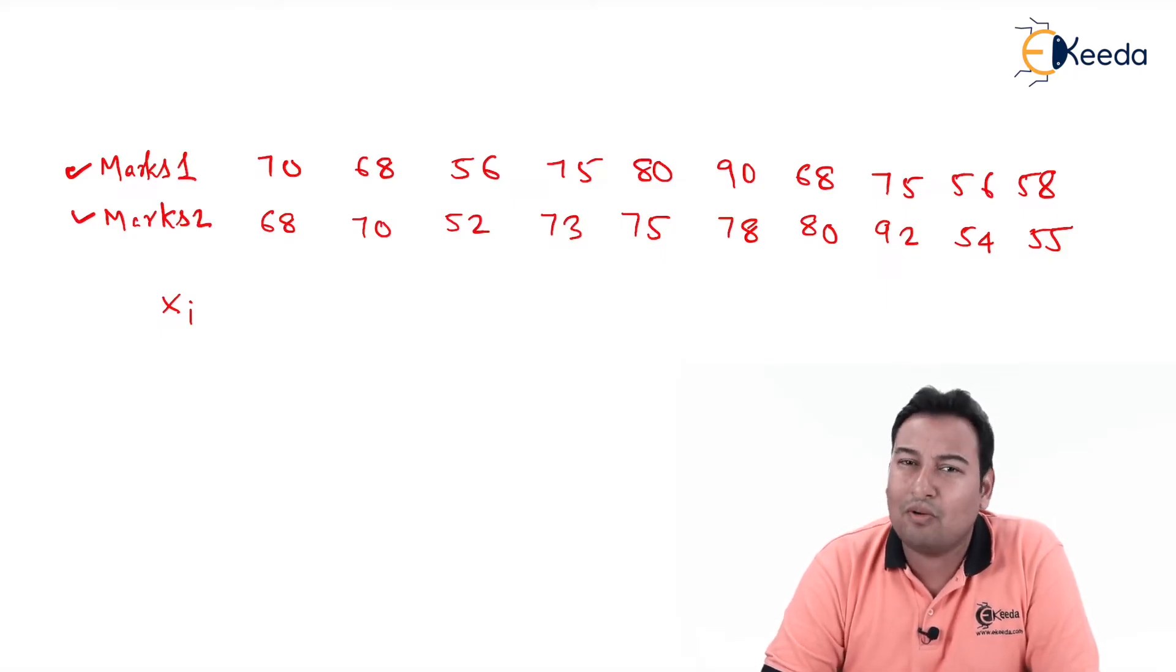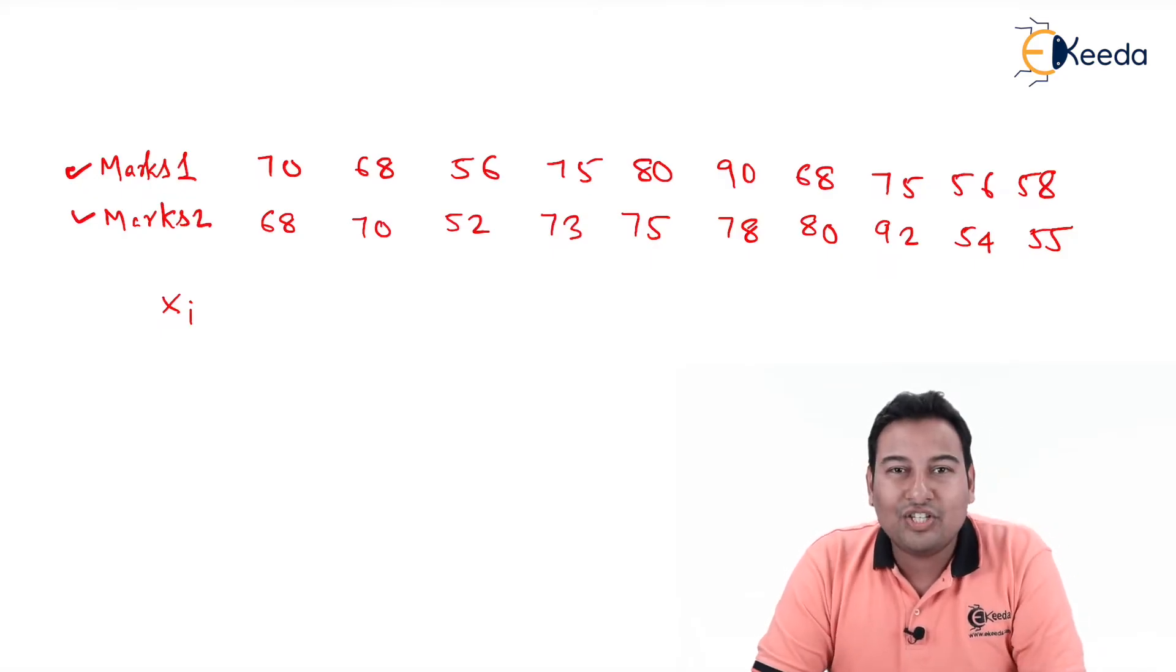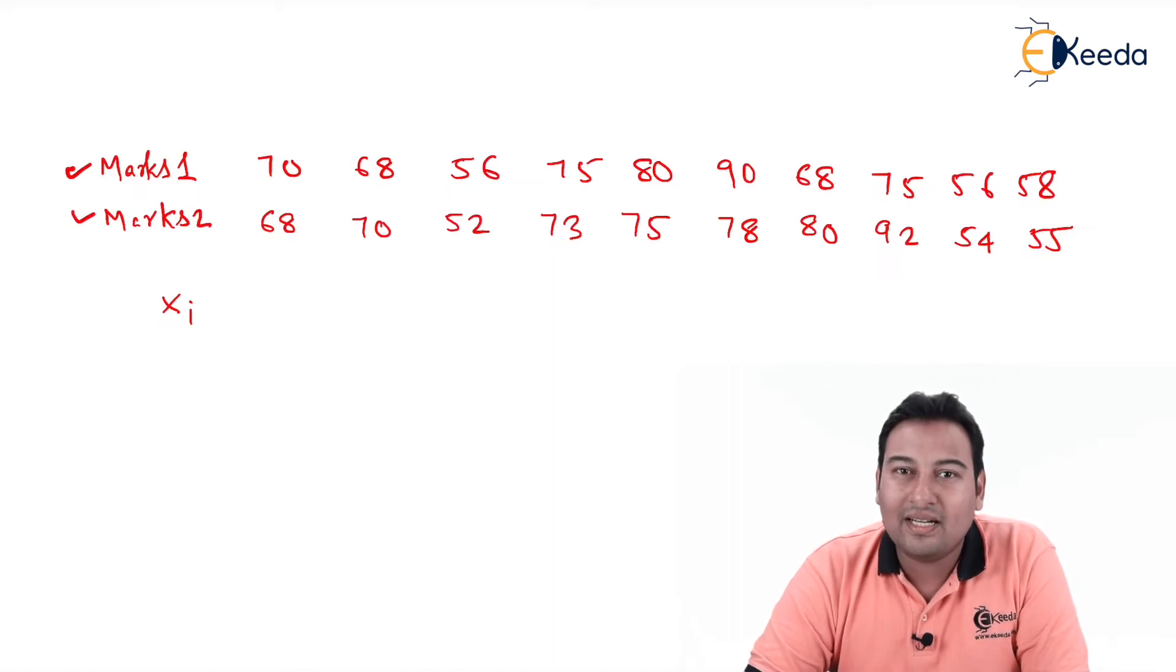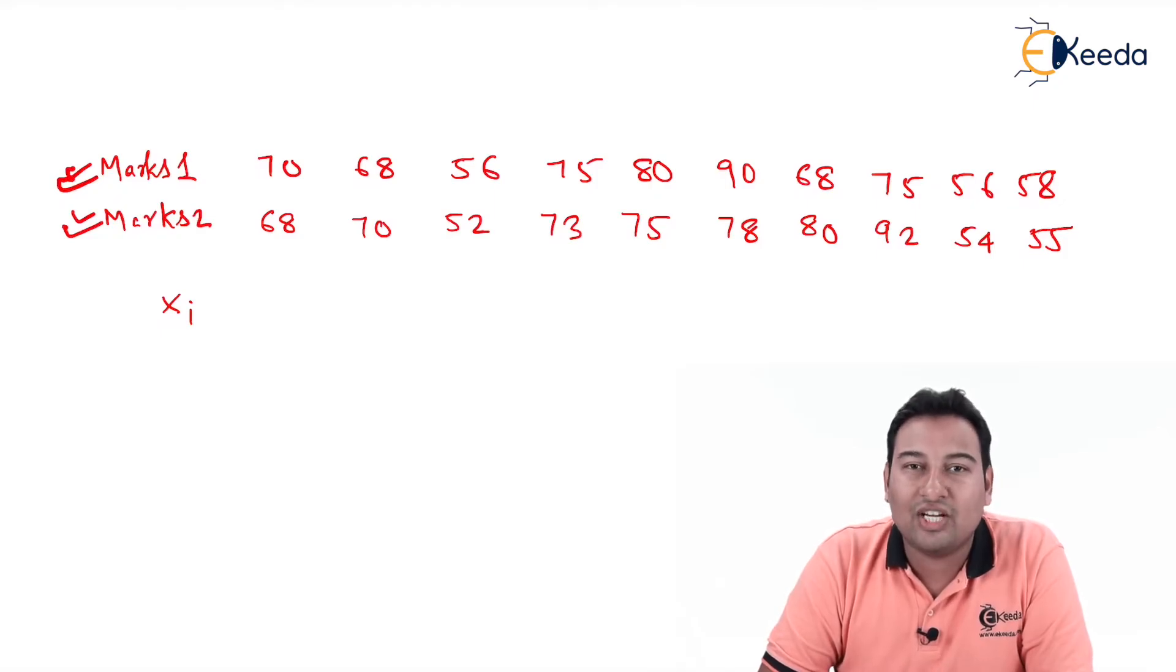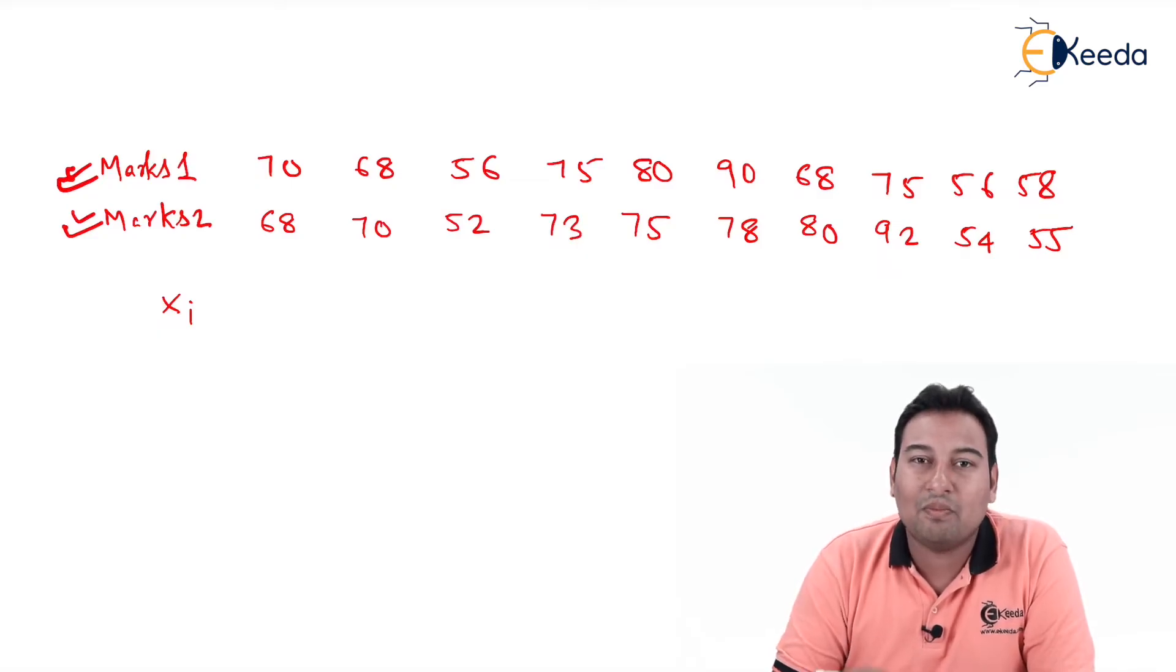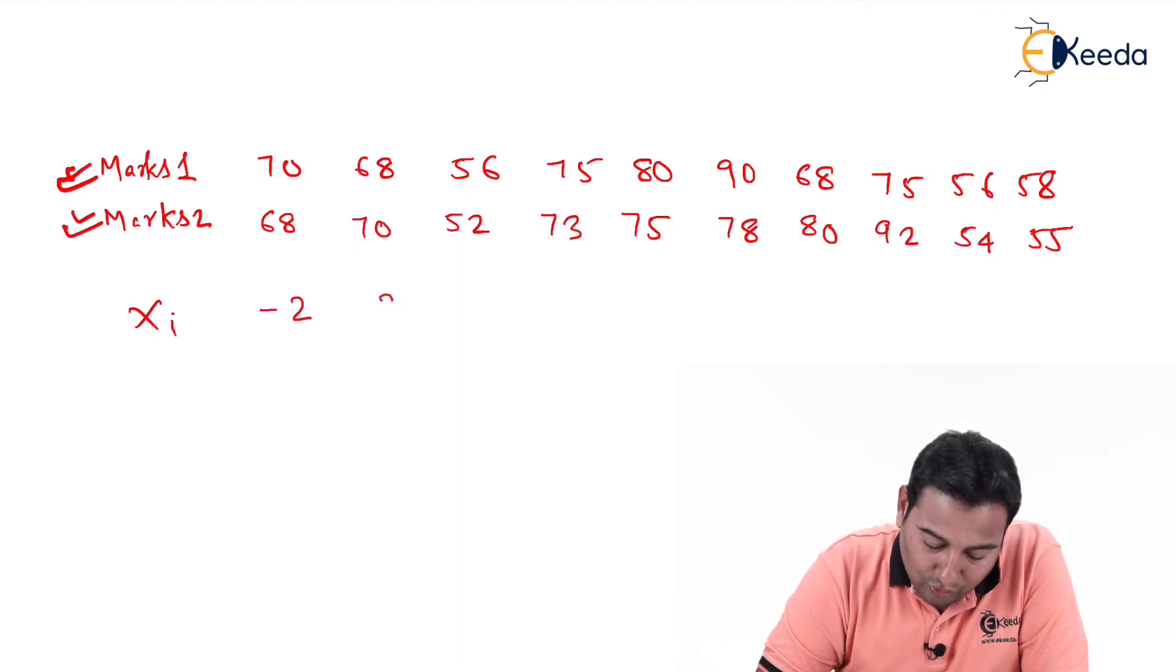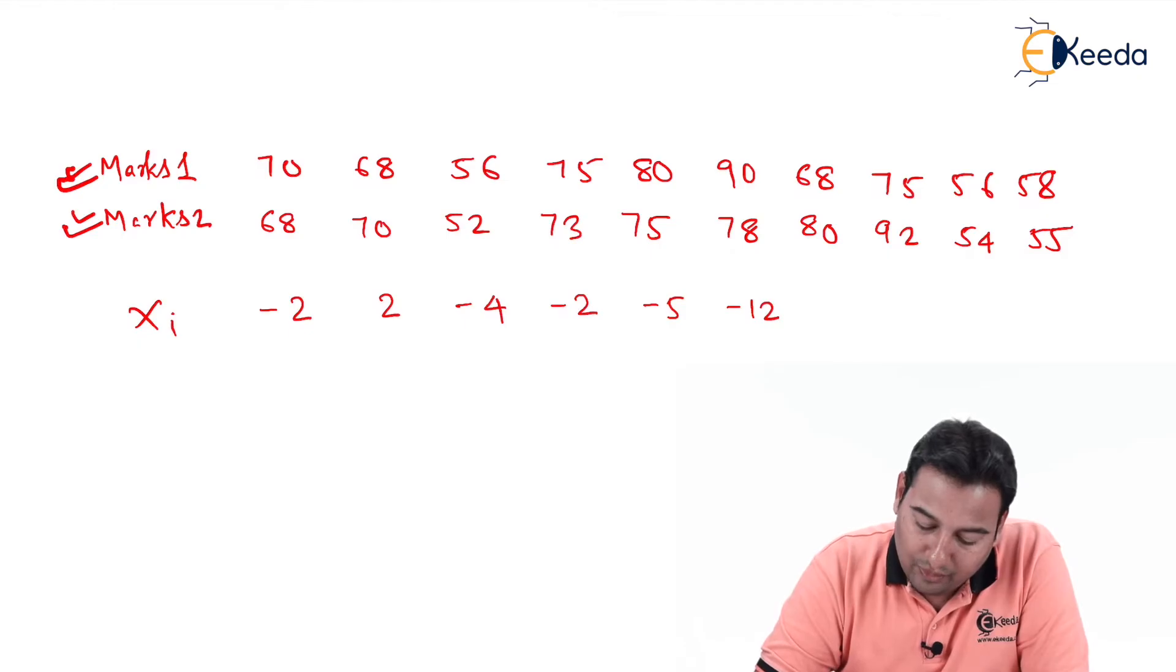The problem is similar to the first problem of this particular type. If you remember your last question, change in blood pressure was already given. But here in this case, change is not given. The data is marks 2 and marks 1, so we need to find the change first. For finding it out, I am subtracting marks 1 from marks 2. 68 minus 70 is minus 2.